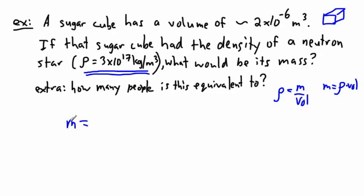So all I have to do is say mass equals the density, 3 times 10 to the 17 kilograms per meter cubed, multiplied by the volume, 2 times 10 to the minus 6 meters cubed. You can see we've done this right because the meters cubed on top will cancel out the meters cubed on the bottom. All I have to do is multiply these two numbers, and I get the mass of that particular sugar cube with the same density as a neutron star.